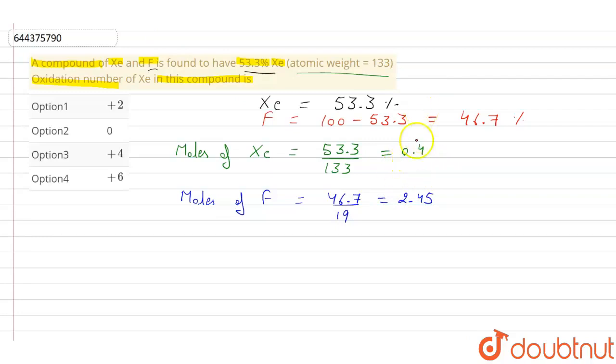Now, to get the simple whole number ratio, we will divide both of them by the smallest number, which is 0.4. So moles of xenon: 0.4 by 0.4, that will be equal to 1.